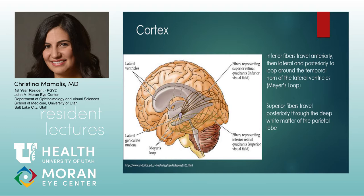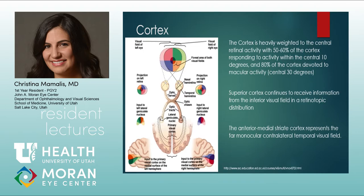Retinotopic distribution means that the visual field pattern from the retina is maintained all the way back to the cortex in terms of how visual information is interpreted in the occipital lobe. Critically, the cortex is very heavily weighted toward the macula: approximately 60% of the cortex is focused on the first central 10 degrees, and approximately 80% of the cortex is focused on the central 30 degrees — making this a very macular-heavy system.